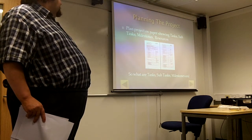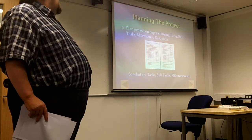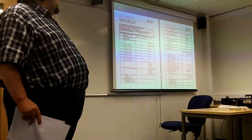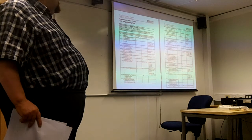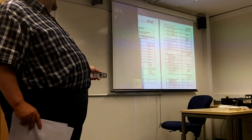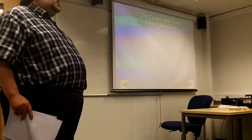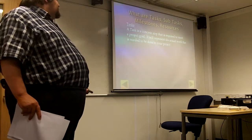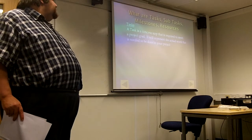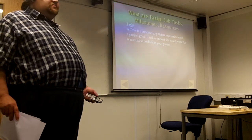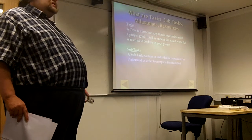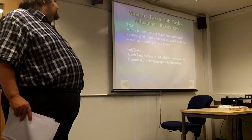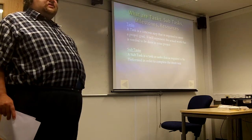Looking at each section — I need to enlarge it a little bit, it's not coming out too well, but you can understand what the proforma would show. So, what are tasks, sub-tasks, milestones, and resources? A task is a concrete step required to meet a project goal; it will represent everything you do within your project. A sub-task is a task that is required to be performed in order to complete your main task.